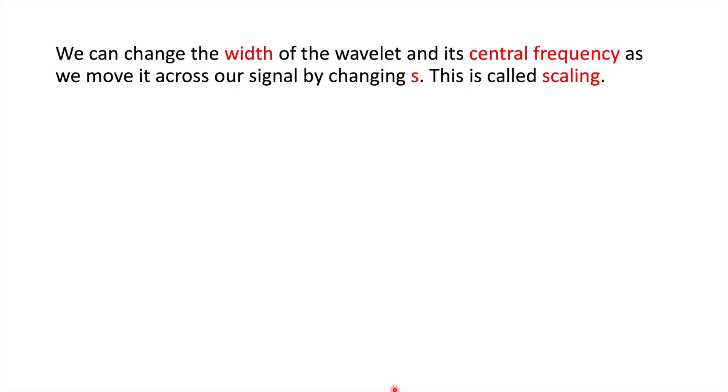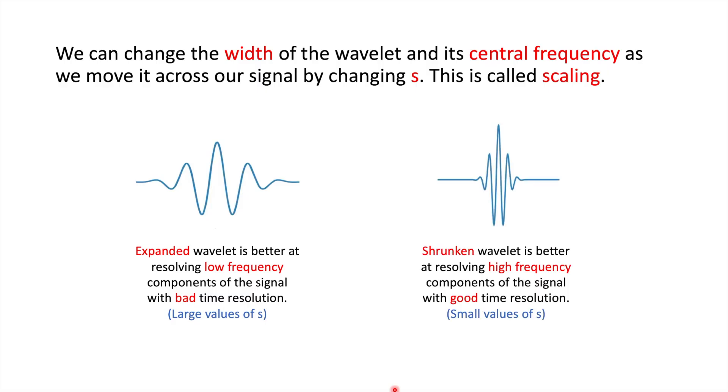So we can change the width of the wavelet and its central frequency as we move it across our signal by changing s. This is called scaling. So an expanded wavelet is better at resolving low frequency components of the signal with bad time resolution, which we looked at before. This corresponds to large values of s. Remember, s was the inverse of frequency. Shrunken wavelet is better at resolving high frequency components of the signal with good time resolution. This corresponds to small values of s.